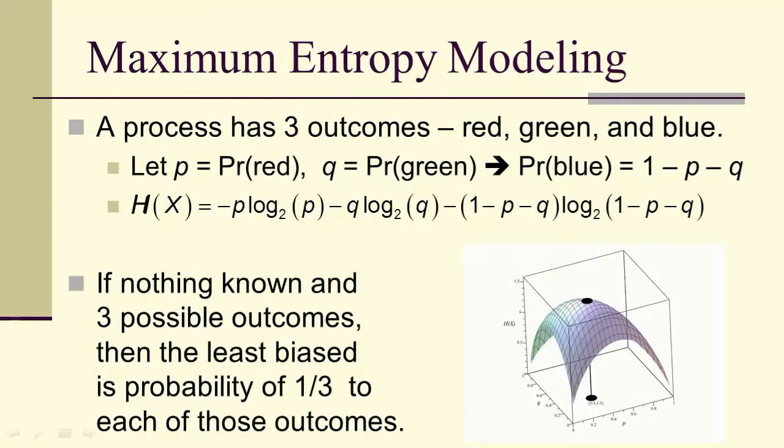So therefore, with a maximum at a third and a third, then that means that if we know nothing about the process except that there are three possible outcomes, the least biased model is the one that assigns a probability of a third to each of the outcomes.